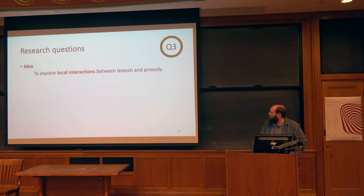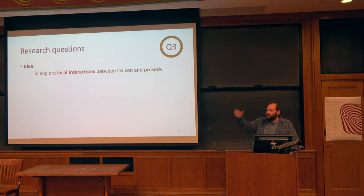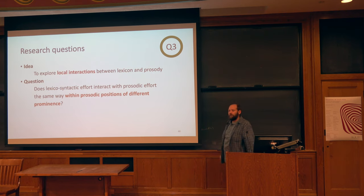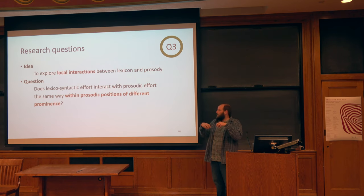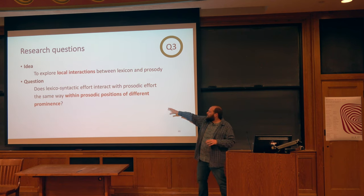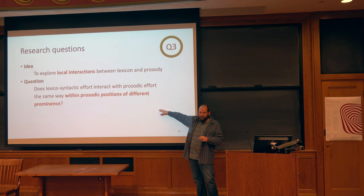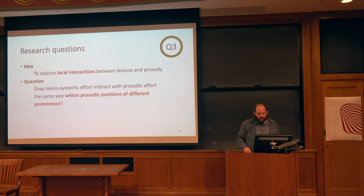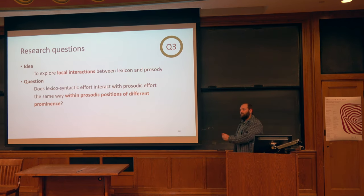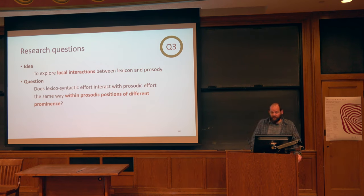The third question: we look inside each of these positions, which may be more or less prosodically prominent, and we see whether the effects observed in a prior study actually modulate duration within each of these positions equally — because they may not. And if they don't, then we have a nice cap to the story about why these forms might not want to be in prosodically prominent positions when they themselves, for lexical reasons, are prosodically prominent.